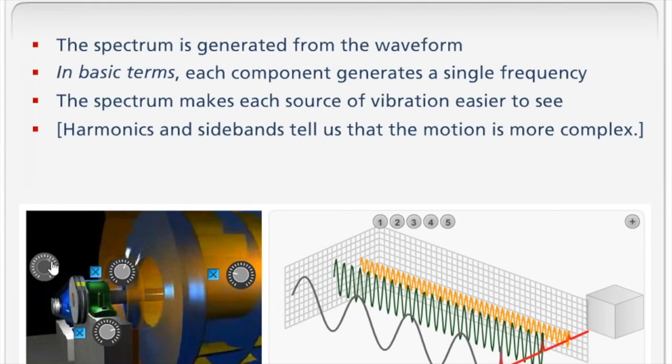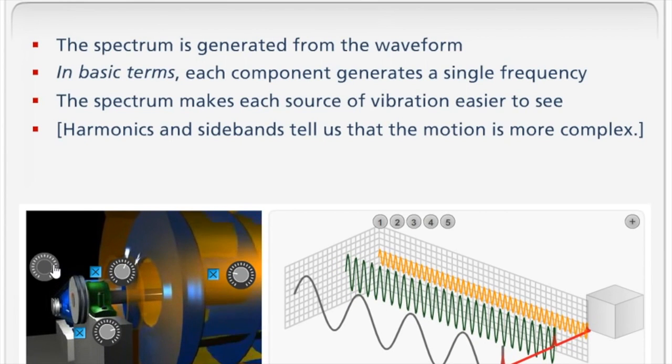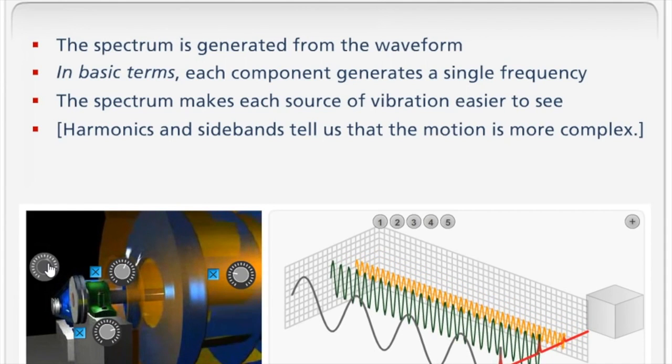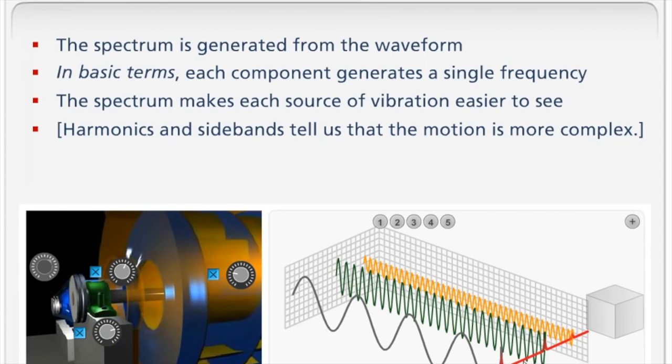If the machine is running faster the machine generates higher frequency. So you see them sort of moving off to the right. If the machine is running slower there are lower frequencies closer to the left. So this is increasing frequency and we have separated the three sources of vibration in proportion to their frequencies.